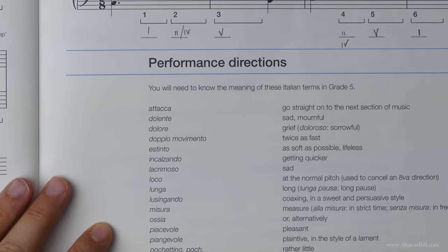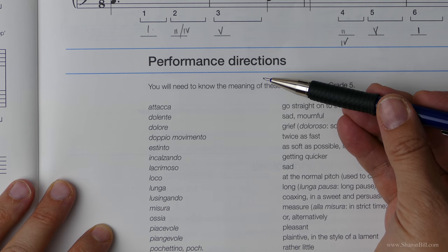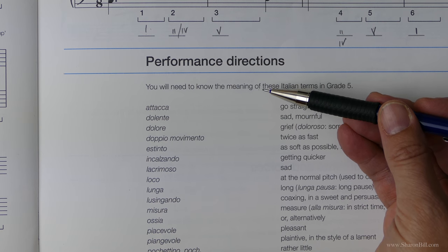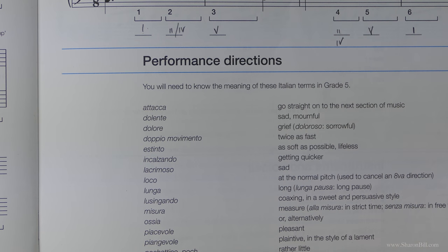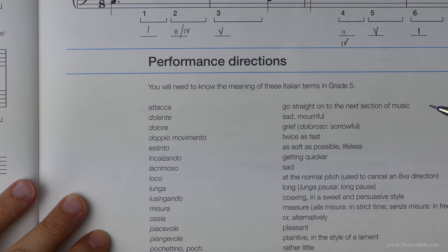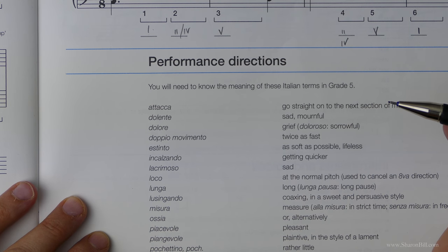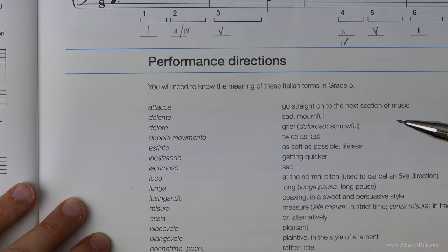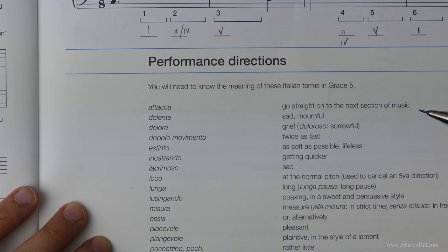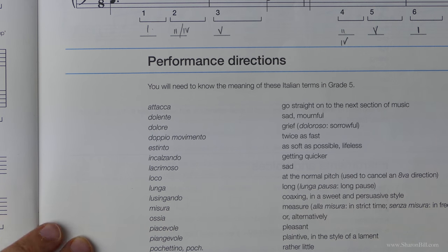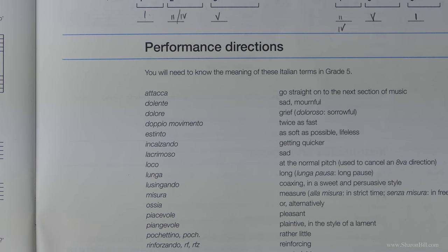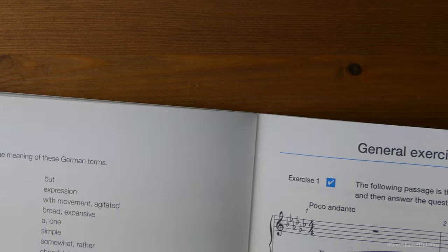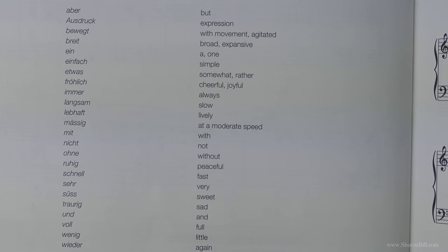Of course these performance directions include all of grade 1, all of grade 2, all of grade 3, all of grade 4, and now also those in grade 5. So you've got performance symbols, you've got Italian performance directions, you've got French, and now you've got German as well. It's all of the previous grades and then all of these terms as well.